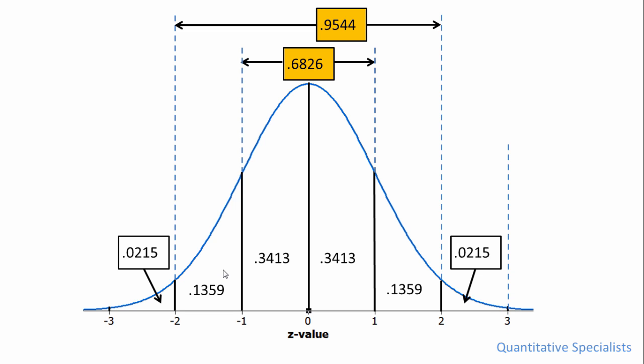And if we went ahead and added up all of these values, so that is all six of these values together, we should get 0.9974.